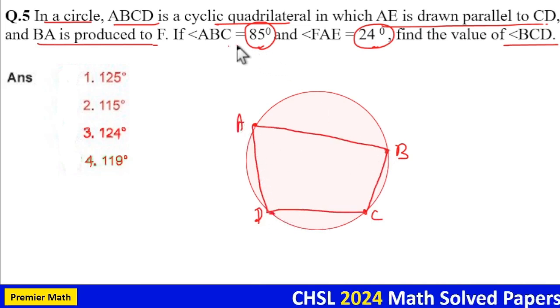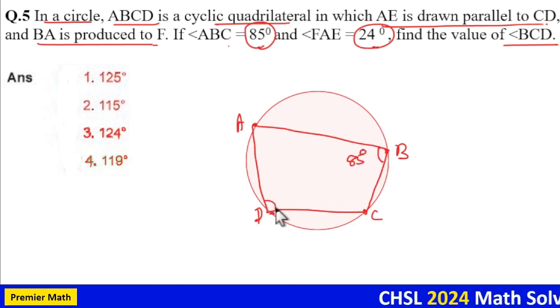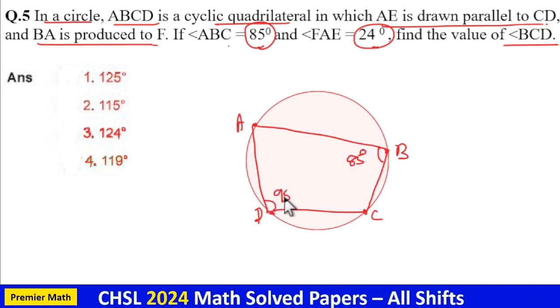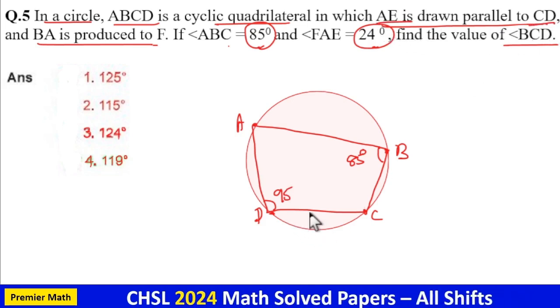Now angle ABC is 85 degrees, which means the opposite angle is 180 minus 85, that is 95 degrees. And here AE is drawn parallel to CD. This is CD.